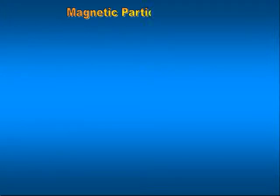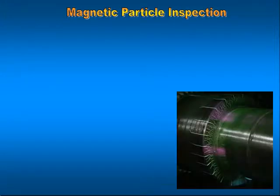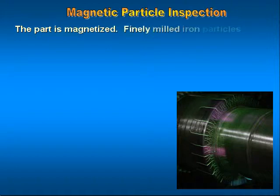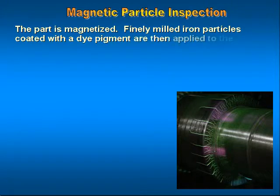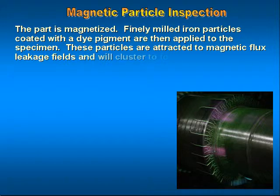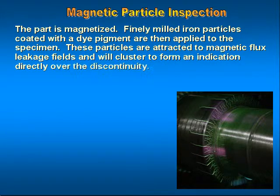Magnetic particle inspection. With magnetic particle inspection, the part is magnetized. Finely milled iron particles coated with a dye pigment are then applied to the specimen. These particles are attracted to magnetic flux leakage fields and will cluster to form an indication directly over the discontinuity.